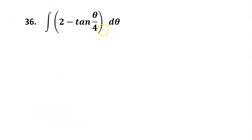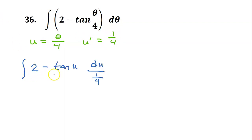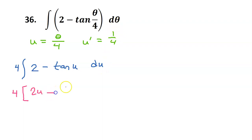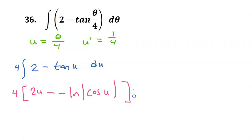By the way, I didn't have to split it up first. I could have just jumped right in with my u substitution and let u equal theta over 4, with u prime equal to 1 fourth. When I do the u substitution, of course when you divide by a fraction you multiply by the reciprocal, so I'm going to take this 1 fourth and put it out in the front as a 4. Now I am going to integrate term by term. The integral of 2 will be 2u. And then the integral of tangent u is negative natural log absolute value of cosine u plus c.